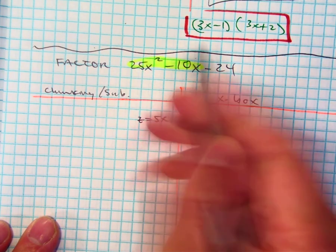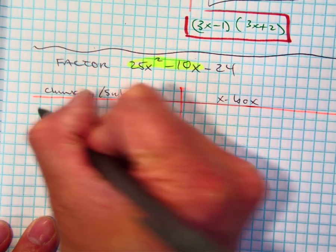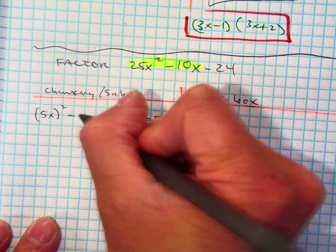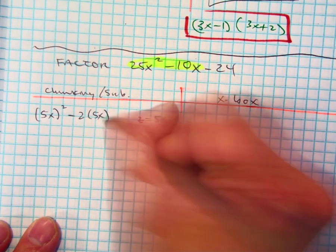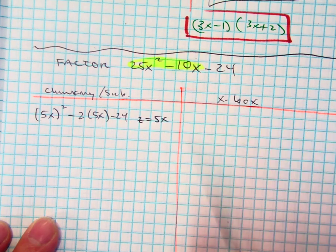So this can be written as, think about it, 5x squared minus 2 times 5x minus 24.